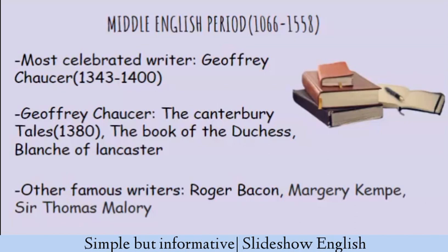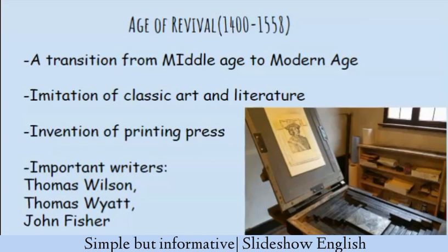After the death of Chaucer, the Age of Revival started in 1400 and ends in 1558. This time period belongs to the Middle English period but is separated as a distinct phase after Chaucer's death. It was called the Age of Revival because there was a transition from the Middle Age to the modern age — a revival resulting in the discovery and imitation of classic art and literature. The printing press was invented, and literary and artistic forms started growing rapidly. Robert Henderson, Thomas Wilson, Thomas Wade, and John Fisher were popular writers. The War of the Roses was another important event of this time.